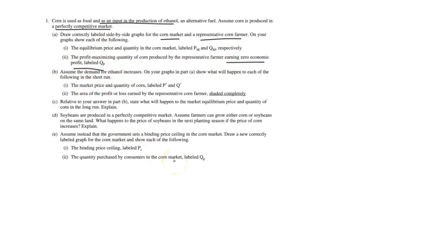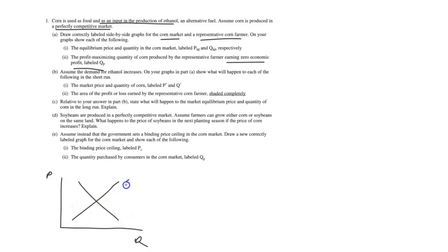Whenever you have a perfectly competitive market, you draw two graphs: one for the market and one for the firm. For the market graph, the y-axis is price and the x-axis is quantity. We draw an upward-sloping supply curve and a downward-sloping demand curve. Their intersection gives the equilibrium price and quantity, labeled PM and QM with dotted lines.